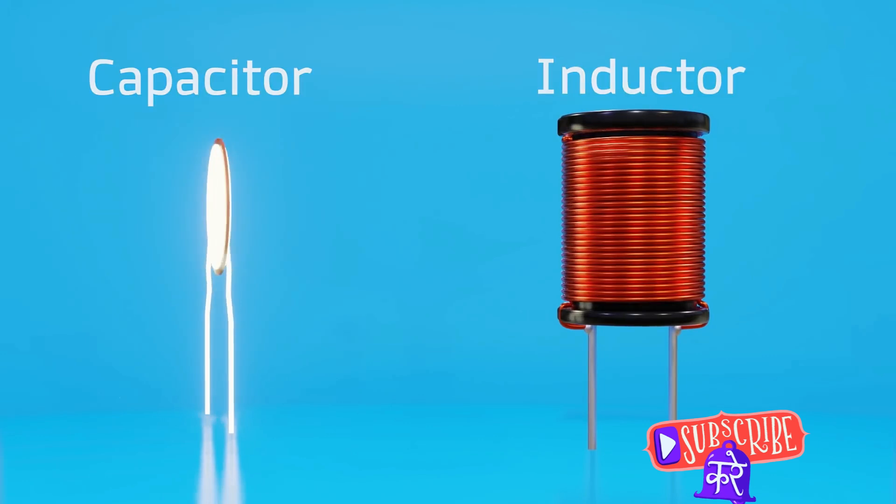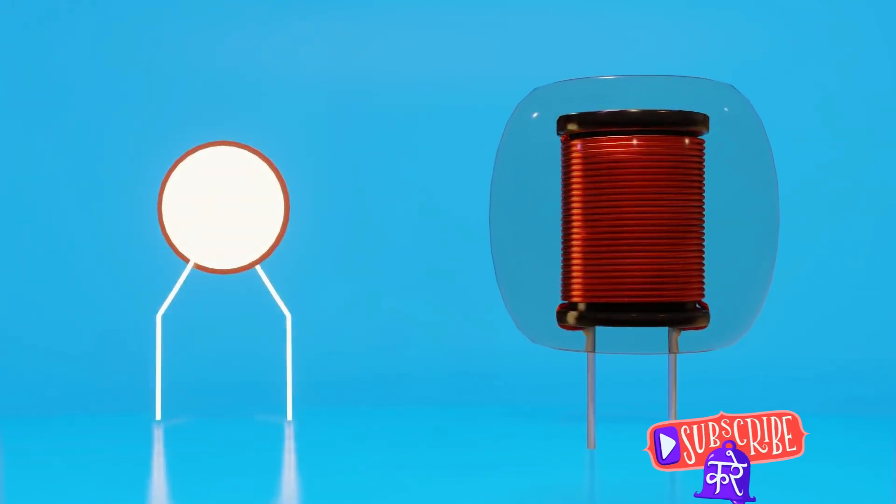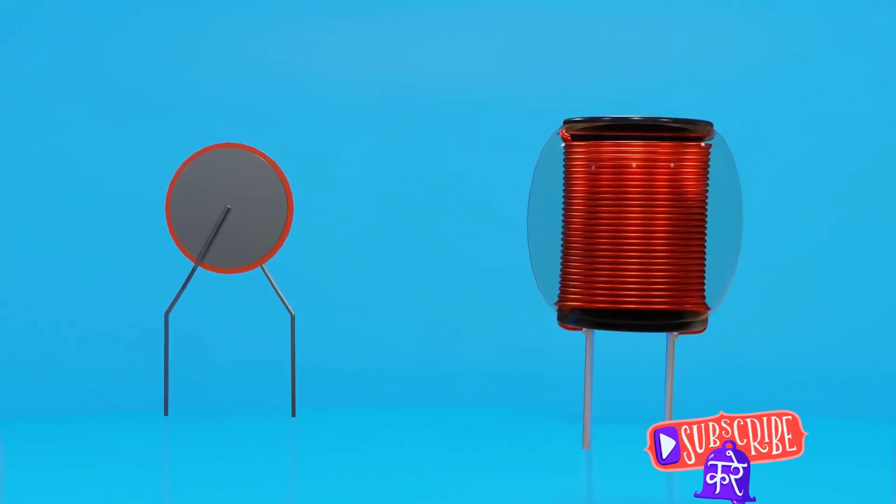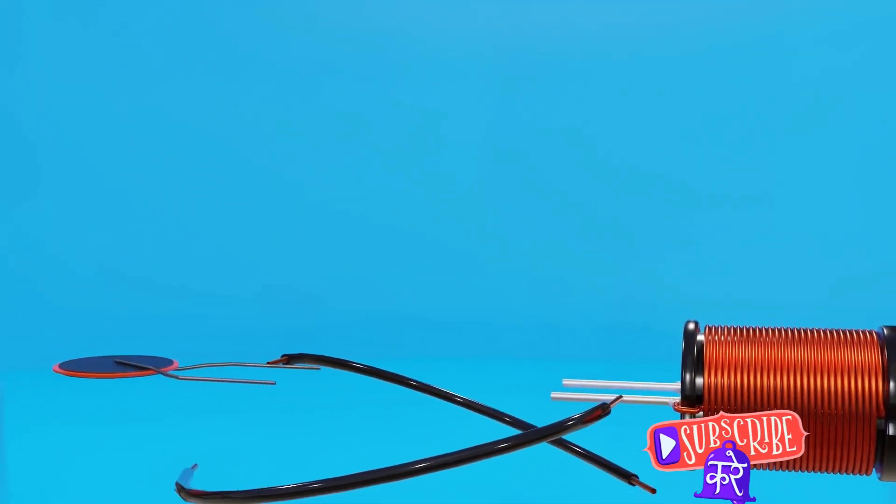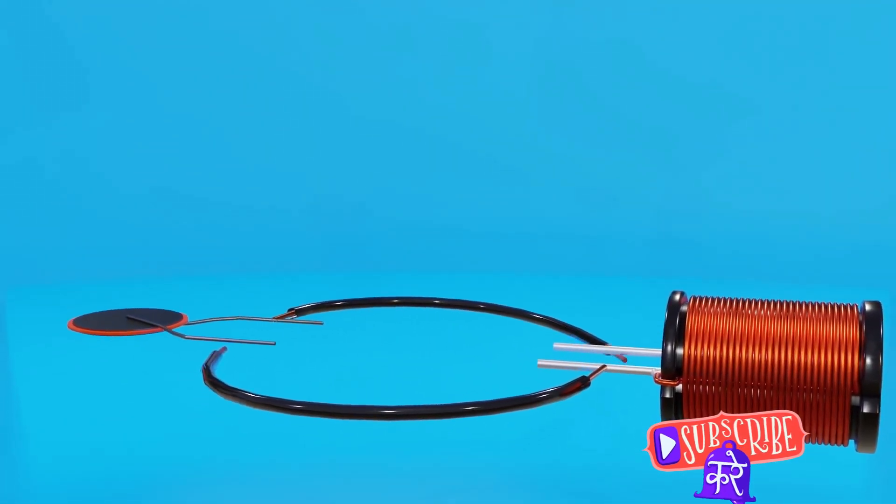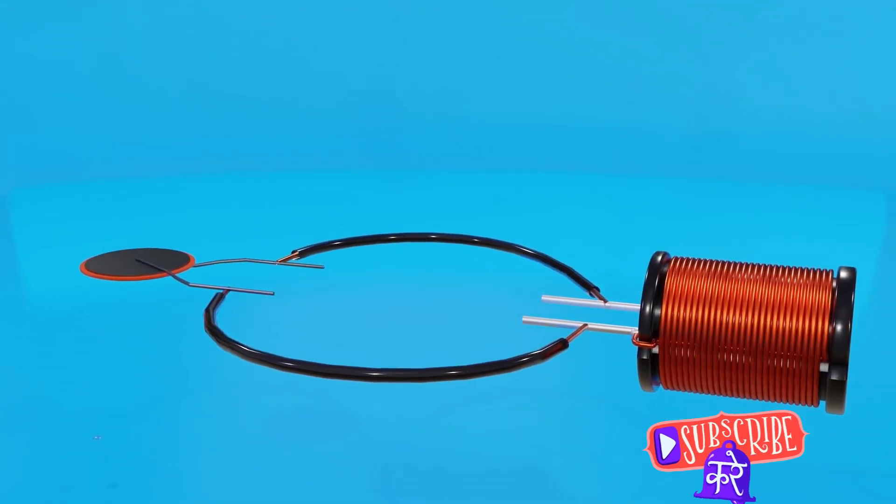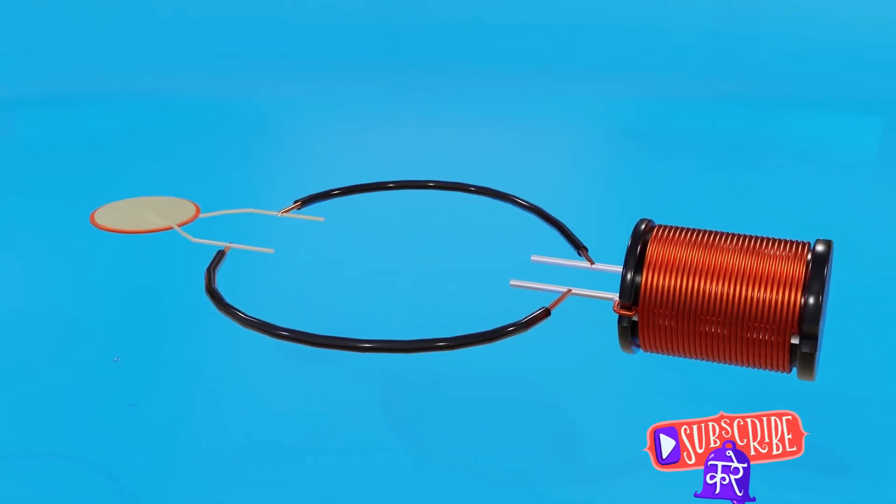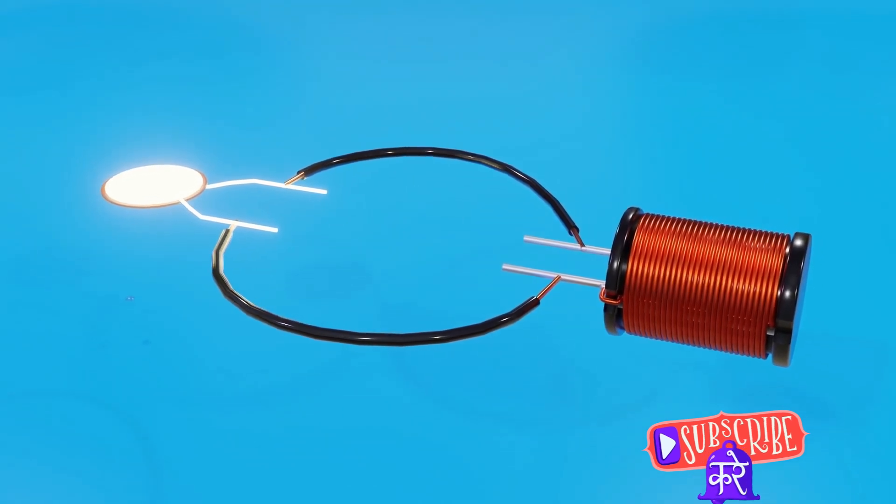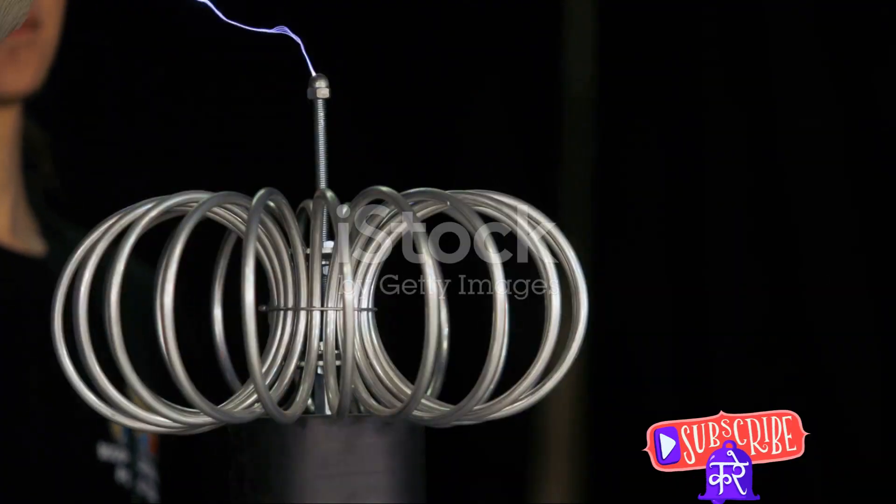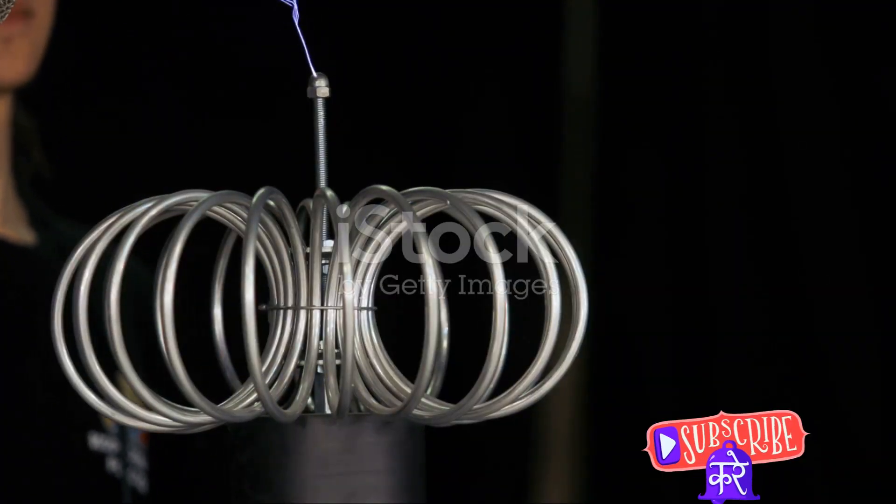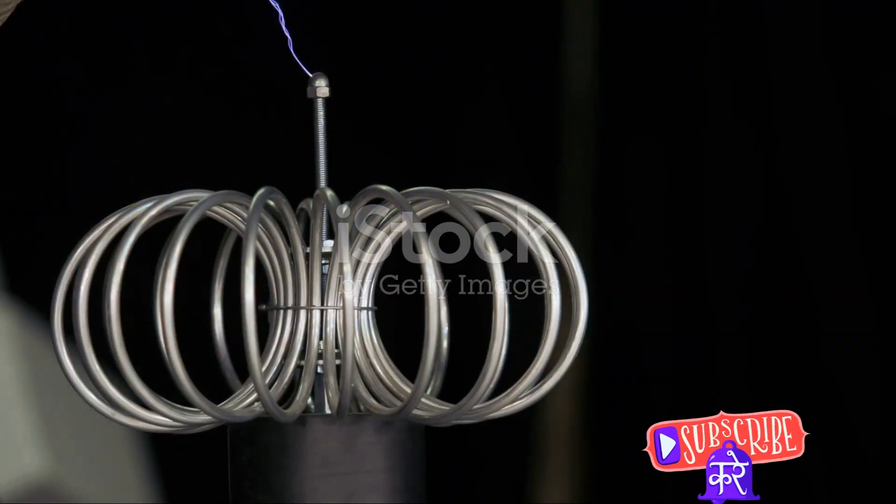The Tesla coil's journey to creating high voltage starts with the power source and the primary coil. The power source is the starting point of the Tesla coil's operation. It provides the initial electrical charge that sets everything else in motion. Picture it as the heart of the Tesla coil, pumping electricity like blood through the system. This electricity then moves on to charge the primary coil.